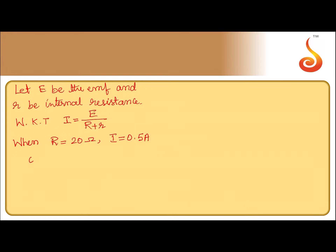Substituting: 0.5 is equal to e divided by (20 + r). Cross multiplying, we get 10 + 0.5r is equal to e. Let us call this equation 1.